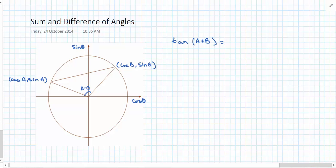Now, we know that tan is the same as sine over cos, so tan of A plus B is the same as sine A plus B over cos A plus B.